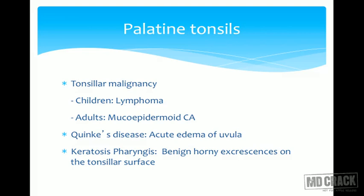Keratosis pharyngeus is a benign, horny excrescences on the tonsillar surface. Food can get stuck in these crypts, leading to pus formation. It is a benign condition and the treatment is regular gargles, removal, and reassurance.